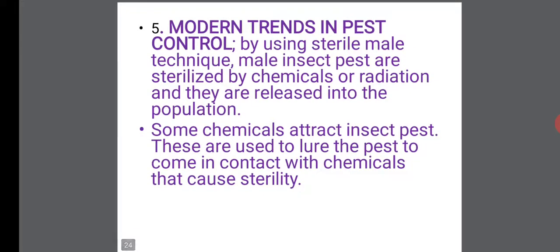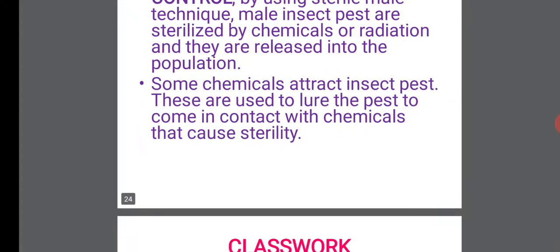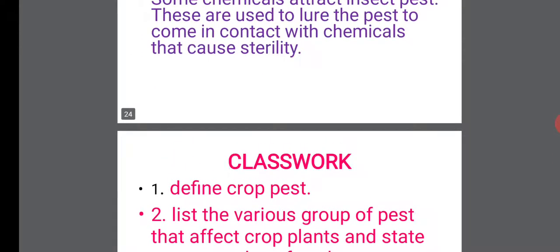The fifth method is modern trends in pest control, using the sterile male technique. Male insect pests are sterilized by chemicals or radiation, making them infertile, and they are released into the population. Some chemicals attract insect pests and are used to lure pests into contact with chemicals that cause sterility.